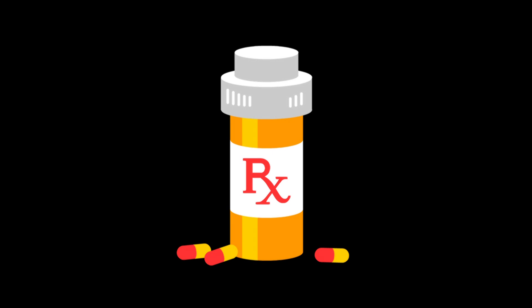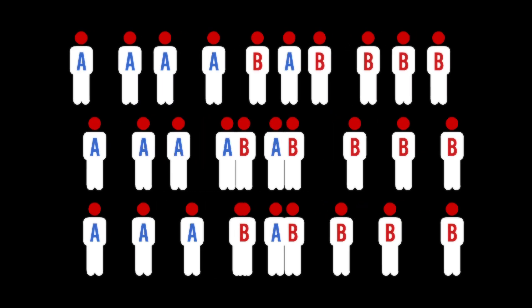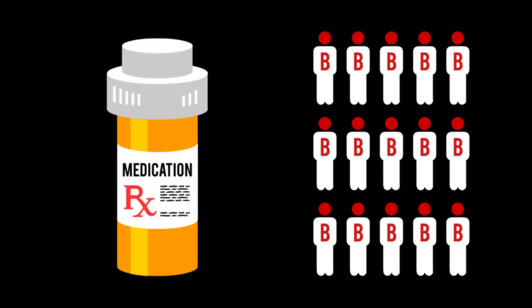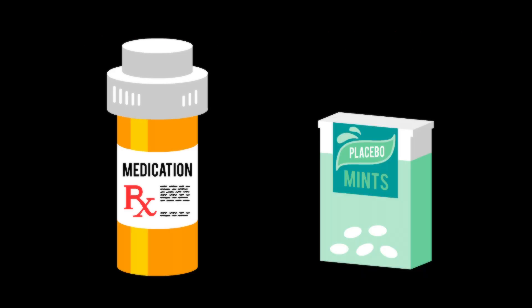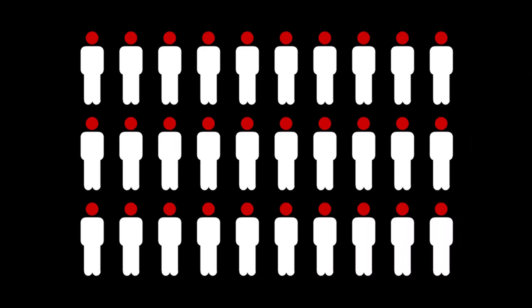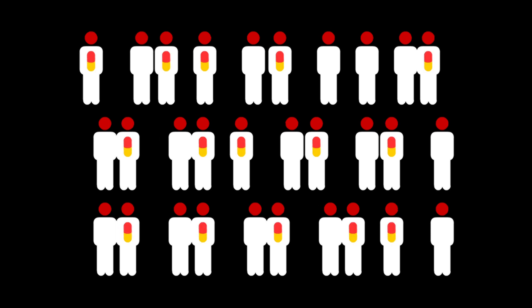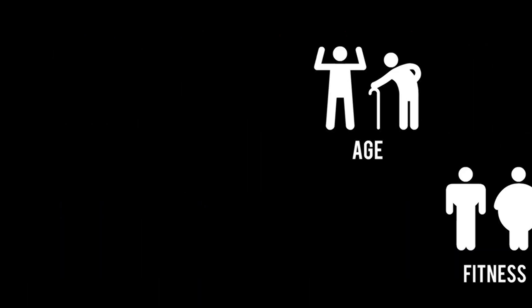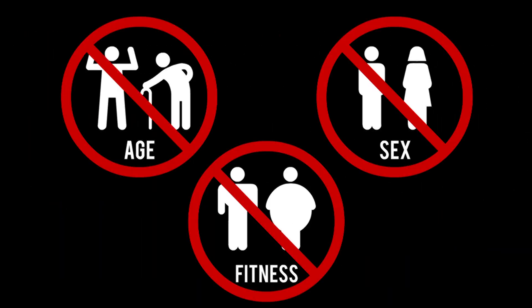For example, when testing a new headache medication, a large pool of people with headaches would be randomly divided into two groups, one receiving the medication and another receiving a placebo. With proper randomization, the only significant overall difference between the two groups will be whether or not they received the medication, rather than other differences that could affect results.